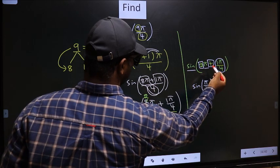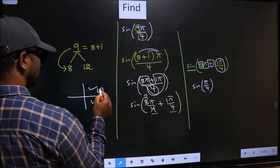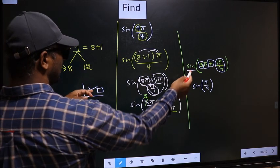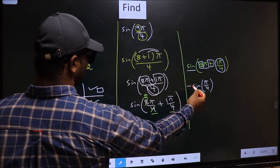Here we have plus. So, the angle lies in the 1st quadrant. And, in the 1st quadrant, sine is positive. So, you put plus.